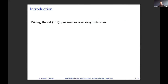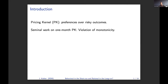In this paper, we're going to estimate the pricing kernel, or stochastic discount factor, and this pricing kernel represents the preferences of investors over risky outcomes. Because the pricing kernel is a central object in many asset pricing models, this exercise has been done before. Seminal work on the estimation of the one-month pricing kernel shows that if you estimate the pricing kernel as a function of the stock market return, this pricing kernel does not slope downward monotonically, but rather there is an interval on which the pricing kernel slopes upward instead of sloping downward.